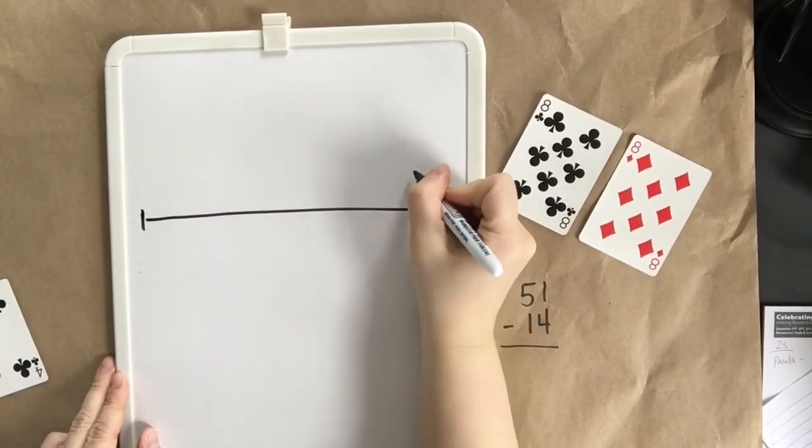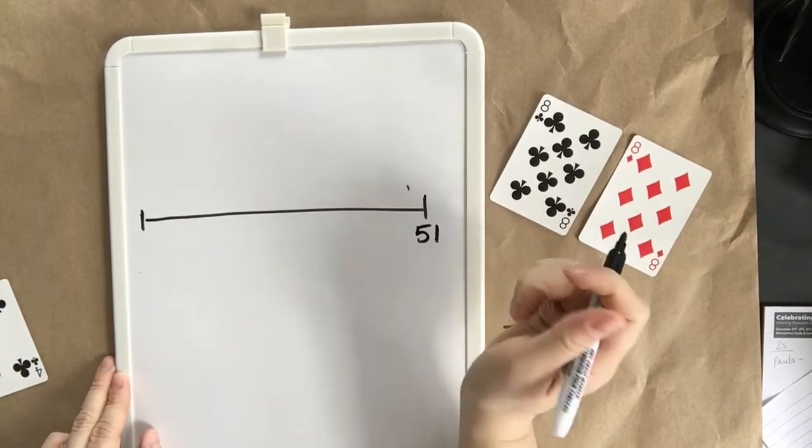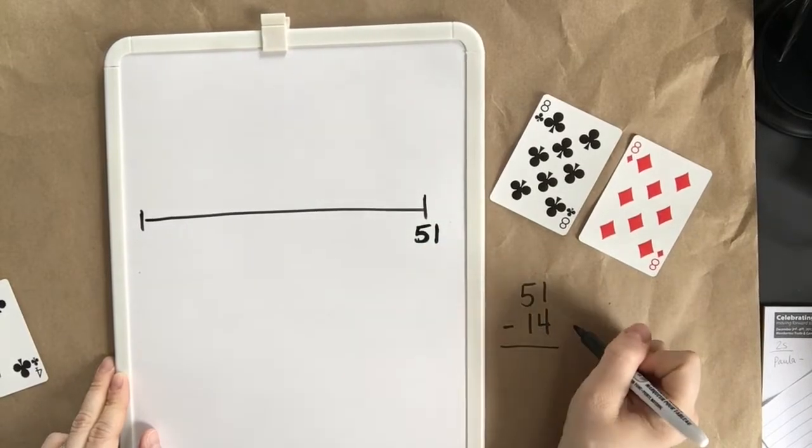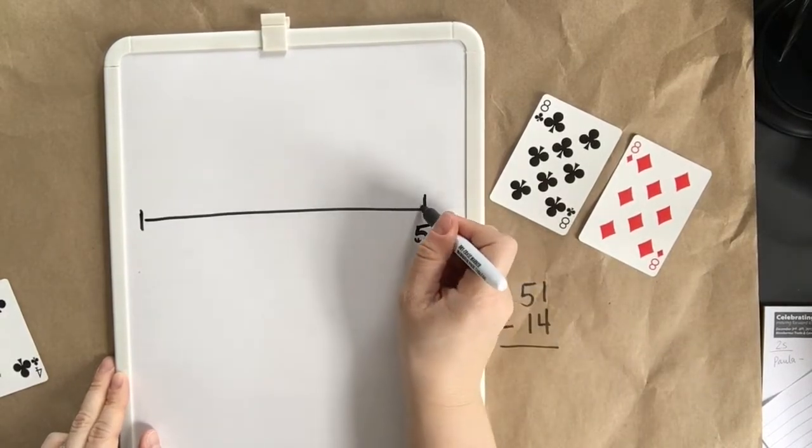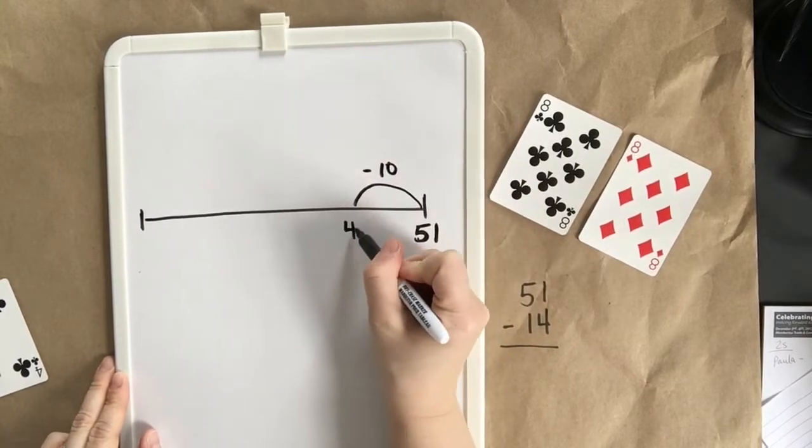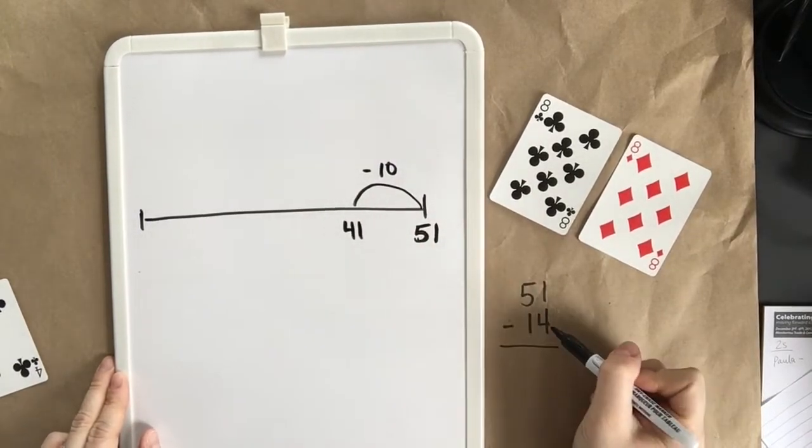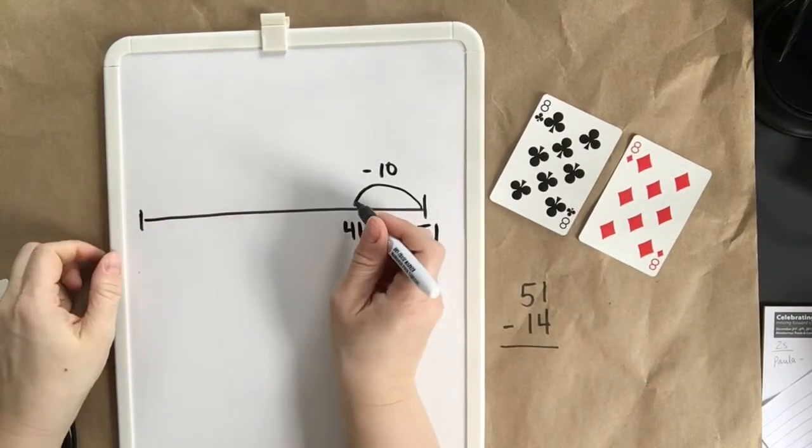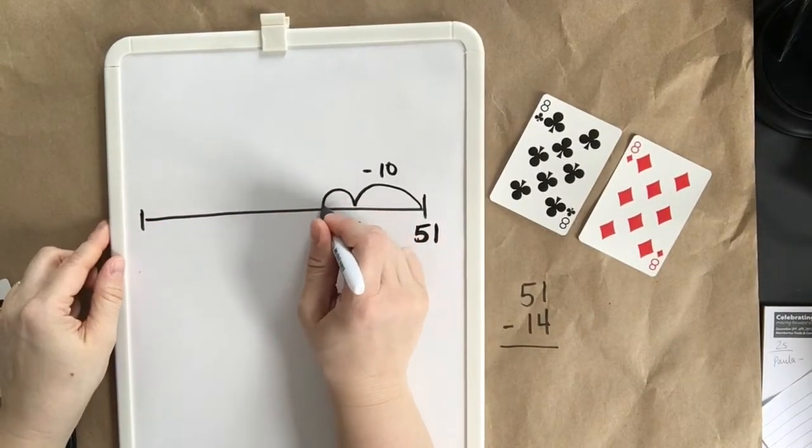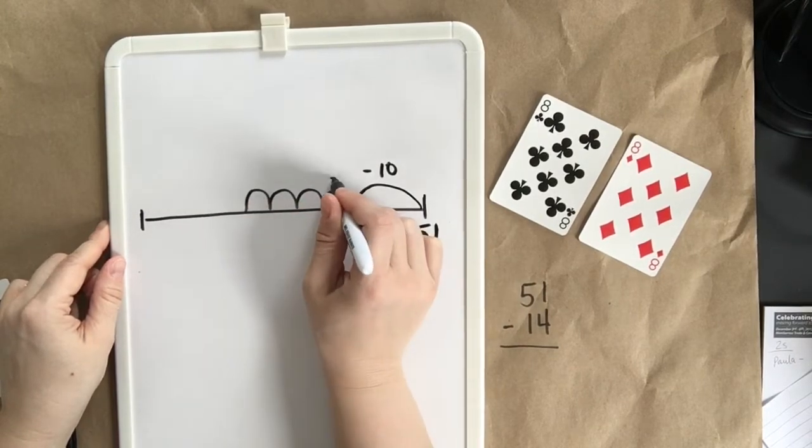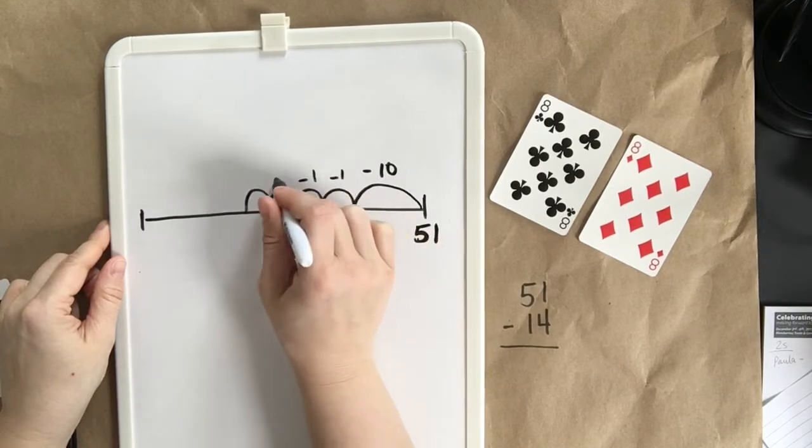Okay, the first choice is an open number line. You can try this. First I write my number 51. Then I need to take 14 away. First I'll take away a group of 10 which leaves me with 41. Then I'm going to take away four singles. 1, 2, 3, 4. And each one of those is worth 1.